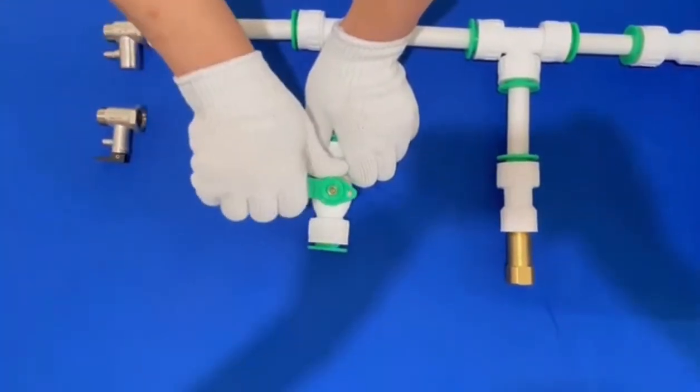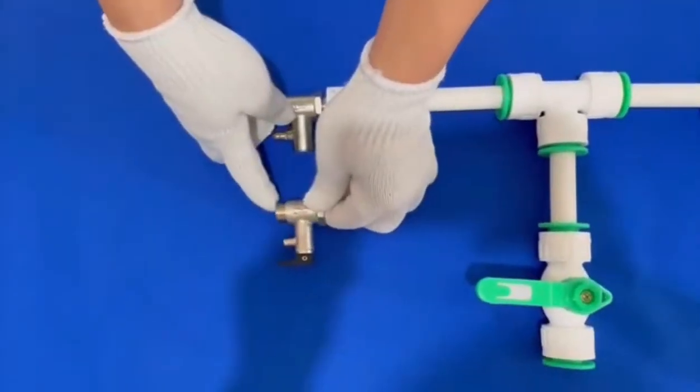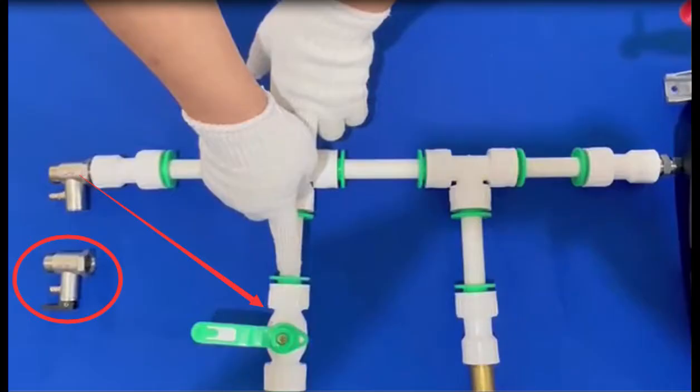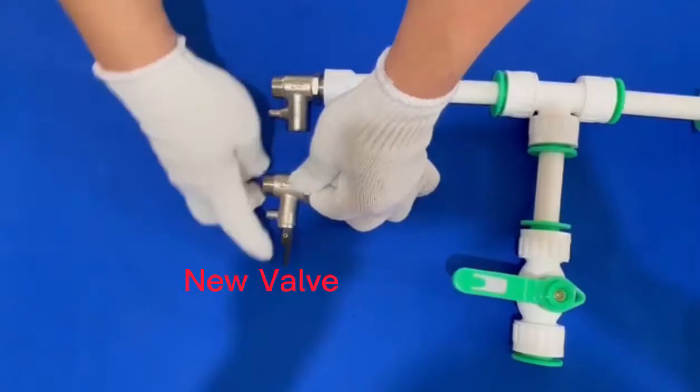When you install the old version relief valve, you need to install the ball valve like this. It should be installed as the lowest position too.